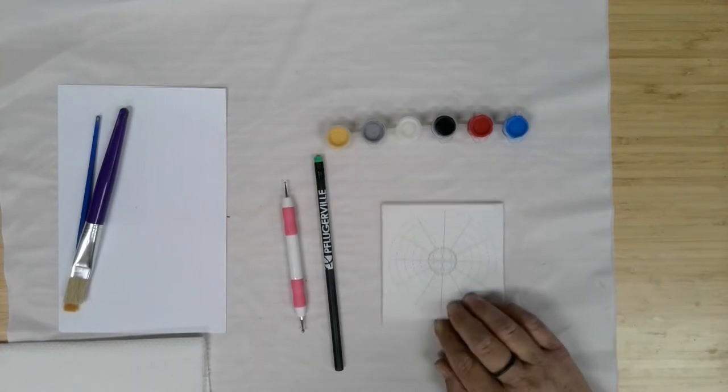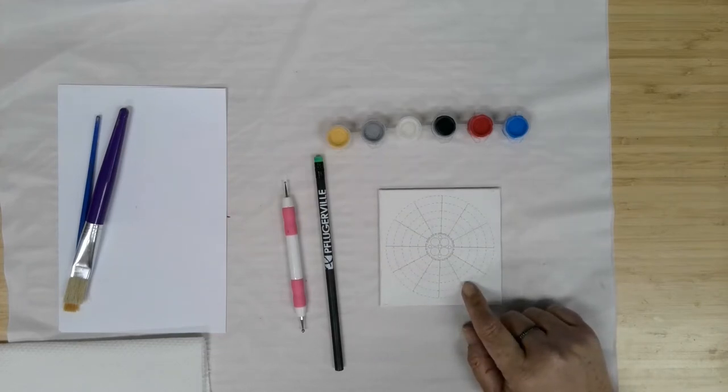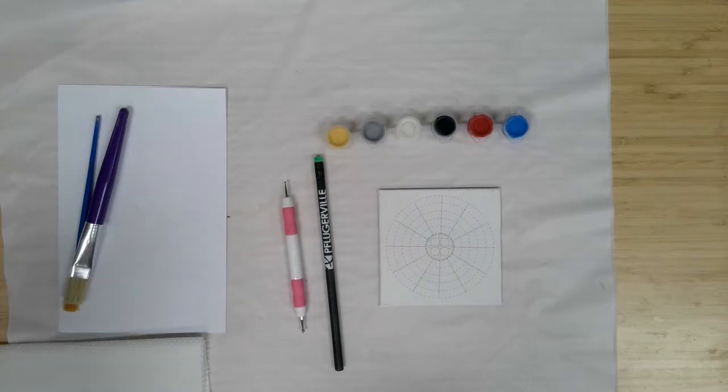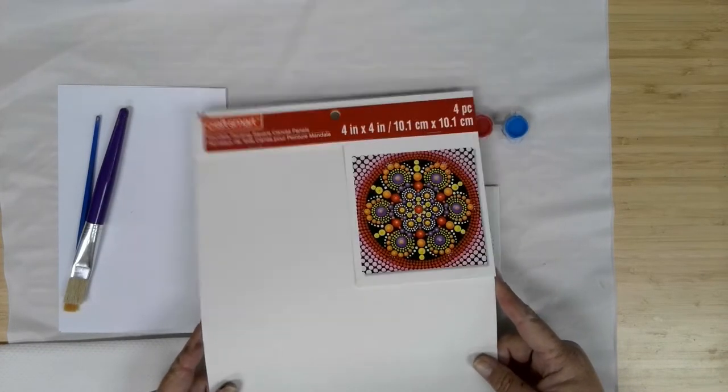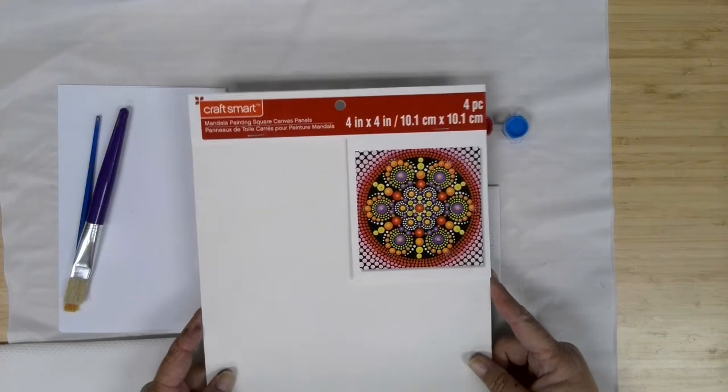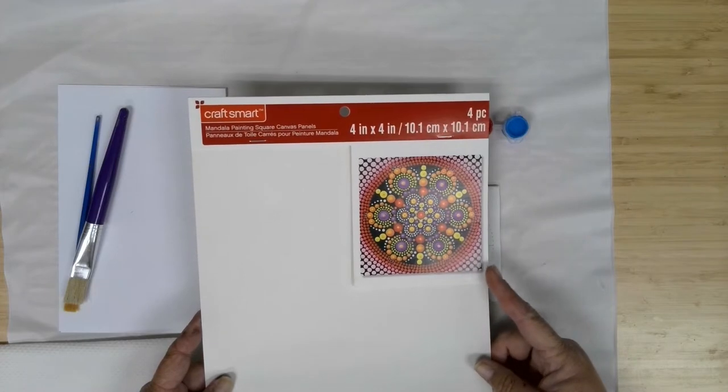As I mentioned, we've got these canvases that are pre-marked to give you a guide for doing your dots. They were an extreme clearance item from last year that I've had around and just been waiting and ready for us to do this particular project as a canvas project. So they are four by four.